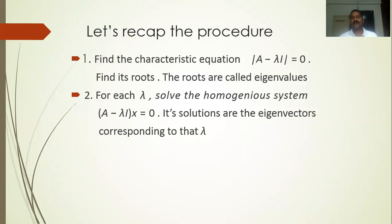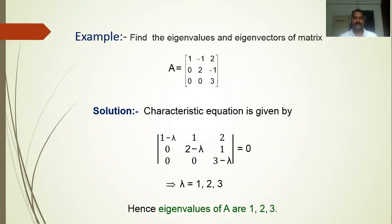So basically it depends upon the solution of a homogeneous system, so you should be very comfortable with how to solve a homogeneous system — we have seen that in our earlier units and classes. Let's take an example: find the eigenvalues and eigenvectors of a matrix A equal to [1, -1, 2, ...]. So what is Step 1? Form the characteristic equation.